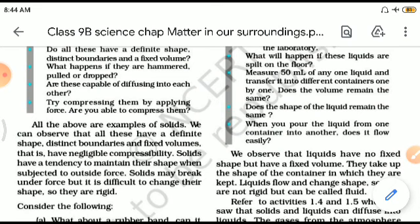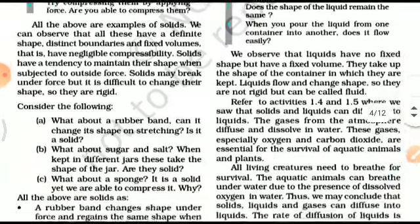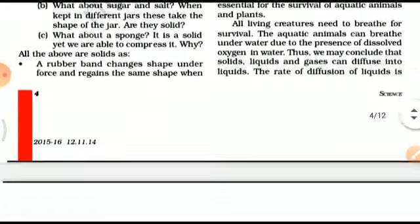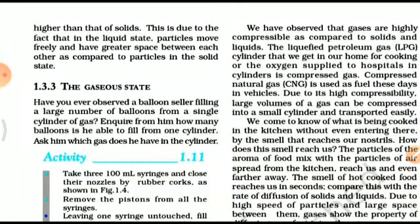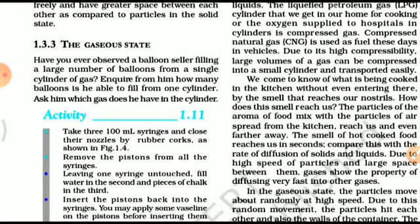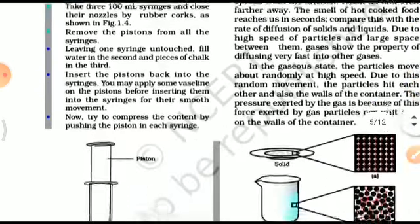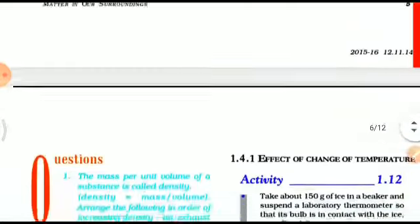Liquids have no fixed shape but have a fixed volume - they take up the shape of the container in which they are kept. Liquids can flow and can change their shape. The gaseous state: gases have neither a definite shape nor size. They take up the shape of the container, can easily flow, and are in random motion.